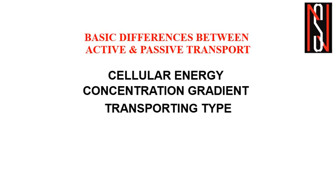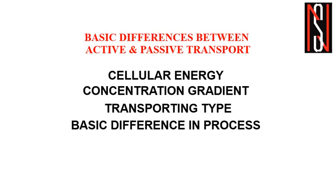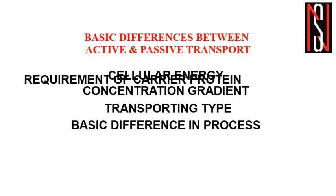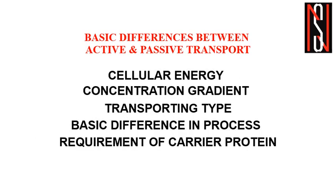Moving to the last part of this class — active transport is involved in the transportation of different molecules in the cell, whereas passive transport is involved in maintaining the equilibrium level in the cell. Active transport is an energetic process because energy is required, whereas passive transport is only a physical process. In active transport, carrier proteins are required, whereas in passive transport, carrier proteins are not involved at all.